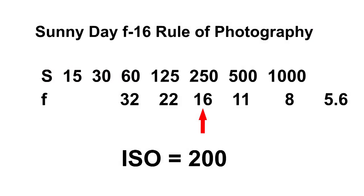Here is another example. This time I am using an ISO of 200. So we set our F-stop at F-16 and we choose the one closest, which is 1/250th of a second — and if you're using a digital meter, I'm sure that you can set it to 200. And just like before, the rest of these settings we can use.